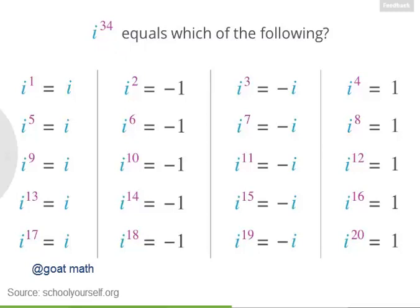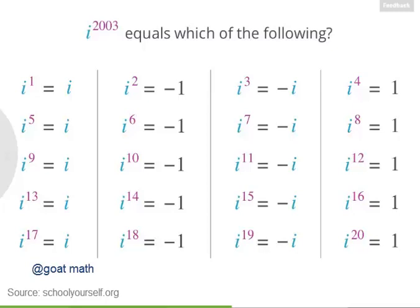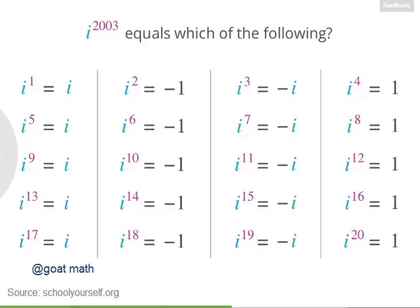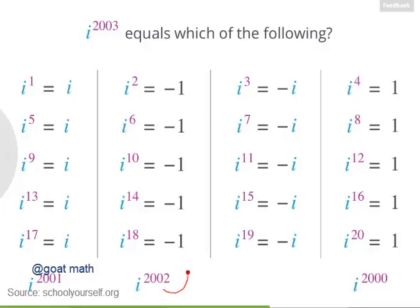Try using this kind of reasoning to figure out what i to the 2003 equals. 2003 is a very large number, but you can cleverly figure out which column of the table i to the 2003 belongs to. One way to figure this out is to realize that 2,000 is a multiple of 4, so i to the 2,000 equals 1. That means i to the 2,001 equals i, i to the 2,002 equals negative 1, and i to the 2,003 equals negative i.